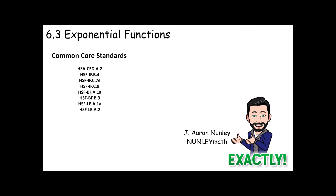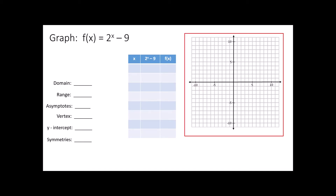Our focus is going to be on the exponential function. Now, if you were given a function like this — graph f of x equals 2 to the x power minus 9 — if you had gone through our functions unit, you would realize that most of the time when we begin graphing functions, most of us start off by creating a table where we insert a value in for x, calculate to find the y or f of x, and plot that point on our graph. But we said that is really the slowest and least efficient way to graph a function.